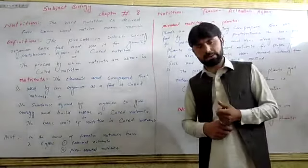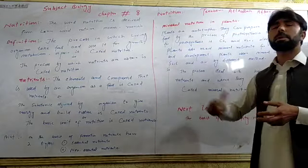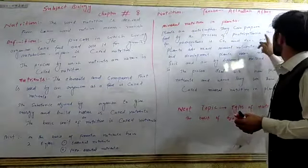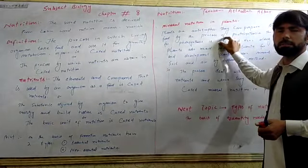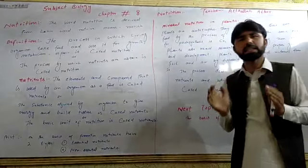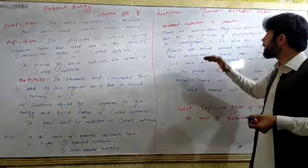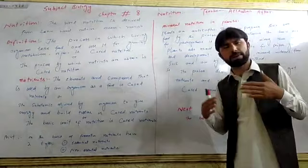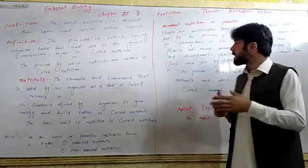It is important for you to understand photosynthesis. The basic needs of photosynthesis are carbon dioxide (CO2) and water (H2O). Along with these basic needs, plants also need mineral nutrients for proper growth and development.